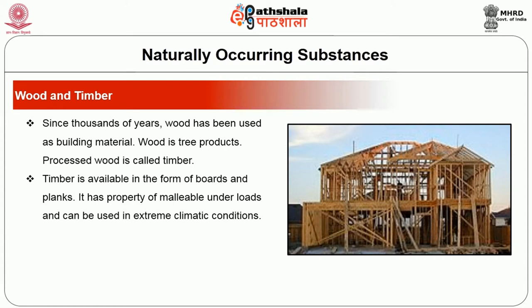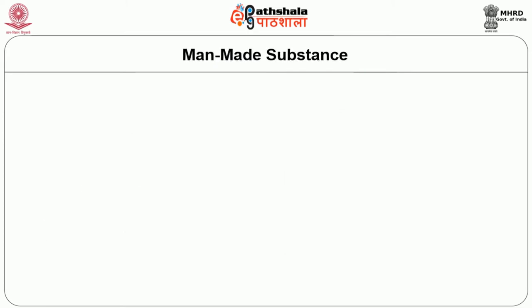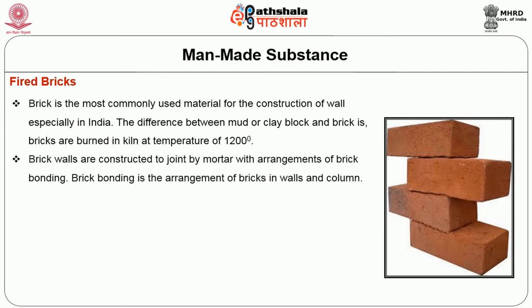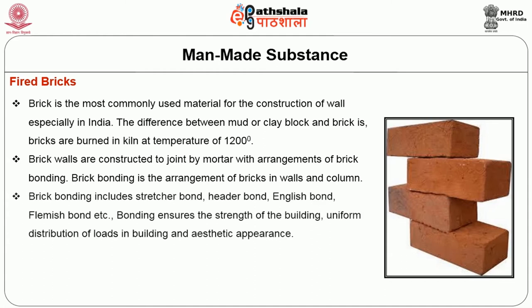Among man-made substances, fired bricks are the most commonly used material for wall construction, especially in India. The difference between mud or clay blocks and bricks is that bricks are burnt in a kiln at a temperature of 1200 degrees centigrade. Brick walls are constructed by joining bricks with mortar and arrangements called brick bonding. Brick bonding includes stretcher bond, header bond, English bond and Flemish bond.